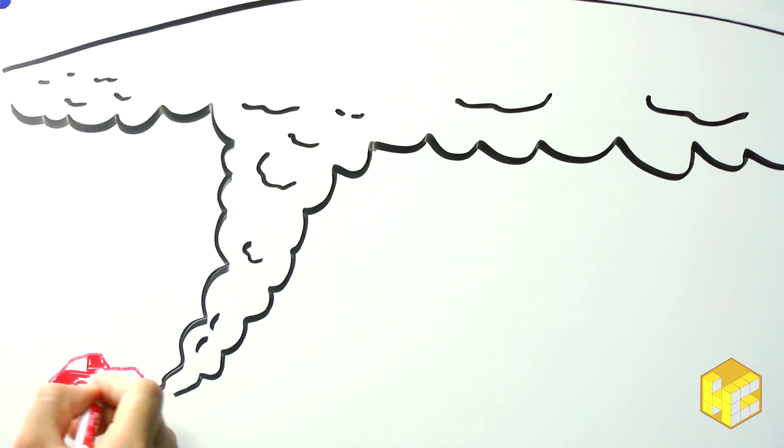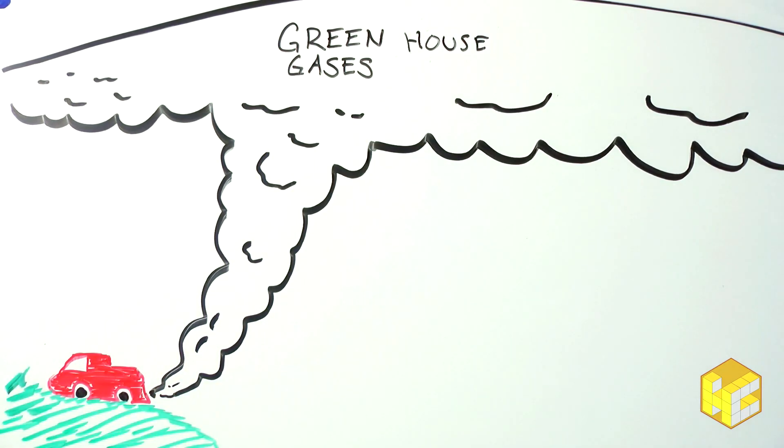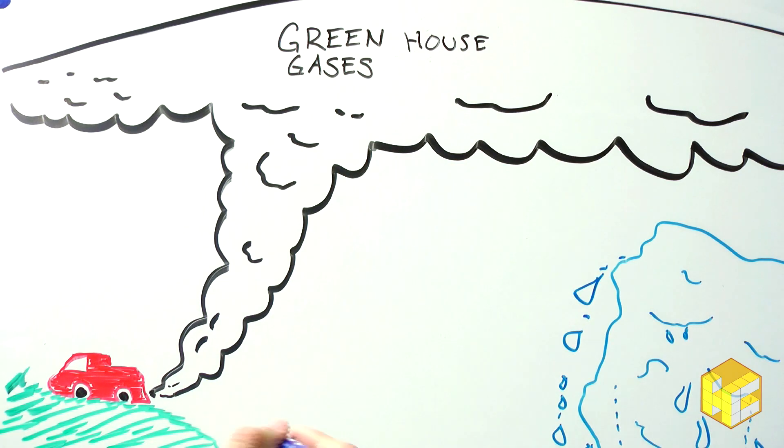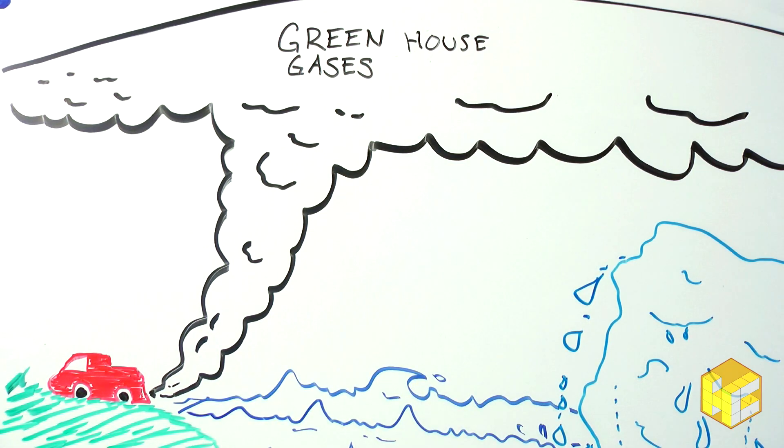Humans emit greenhouse gases into the air, which trap heat in the atmosphere and cause the earth to warm. As the temperatures increase, the masses of ice at the poles begin to melt.